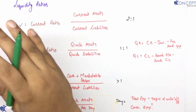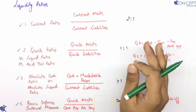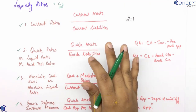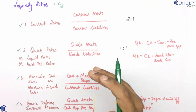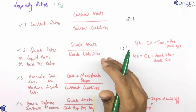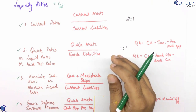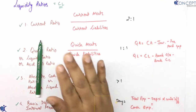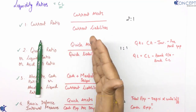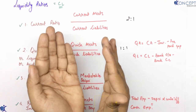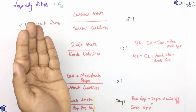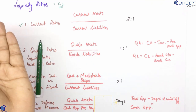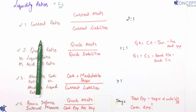Liquidity meaning — current liabilities jo mehari hain, unhe chukana hai. Current liabilities is nothing but creditors, bills payable — all these things are current liabilities. Current liabilities ko compare karna chahiye current assets ke saath, kyunki current assets woh hain jo mujhe jaldi paisa dene waale hain.